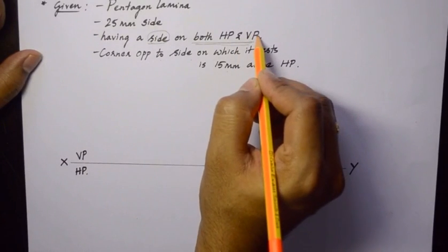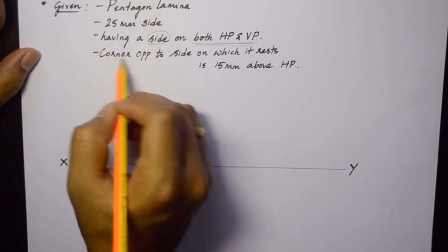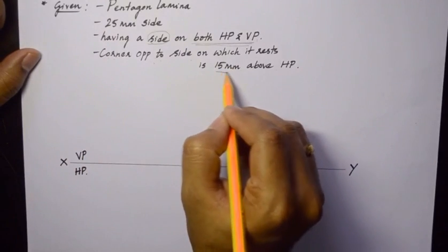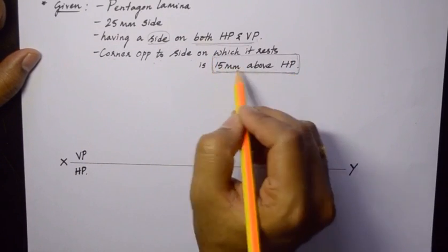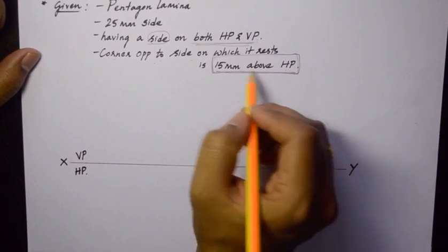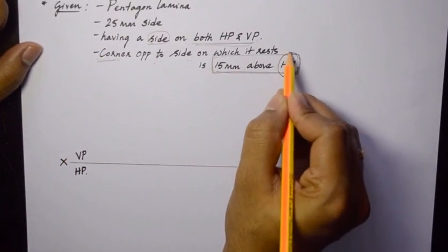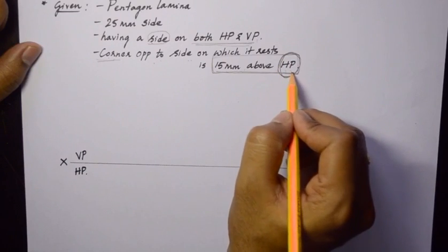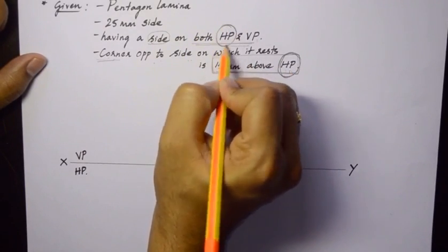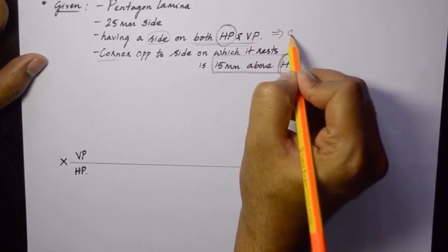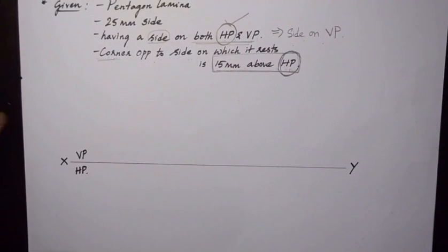If you are not able to get the answer for drawing the first position from the first condition, you can go on reading the next condition: the corner opposite to the side on which it rests is 15 mm above HP. This condition is given with respect to HP, so you need to draw that in the vertical plane. Since this condition is given with respect to HP, we need to draw the plane figure on HP itself. If we draw the plane figure on HP, the side on HP will be satisfied, and the only remaining condition will be side on VP.